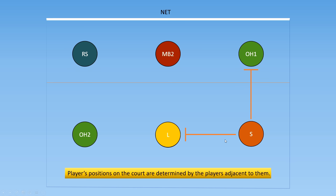Looking at the middle, there are actually three different players who are next to the libero. So this is saying that the libero cannot cross to the left of the outside hitter, to the front of the middle blocker, or to the right of the setter.